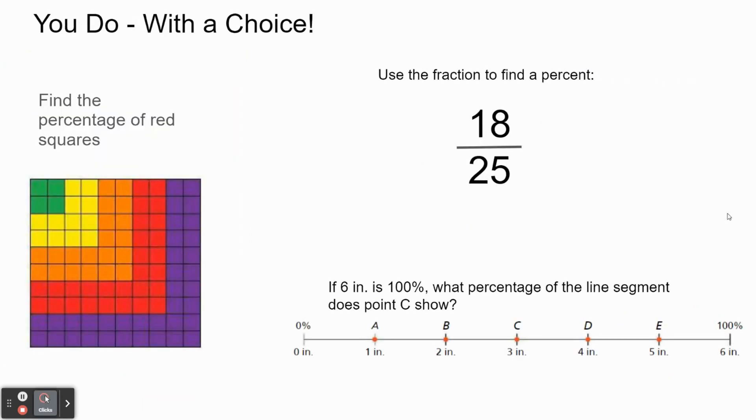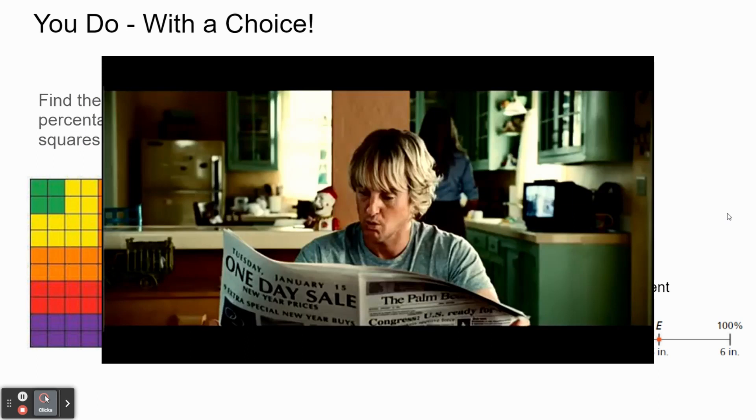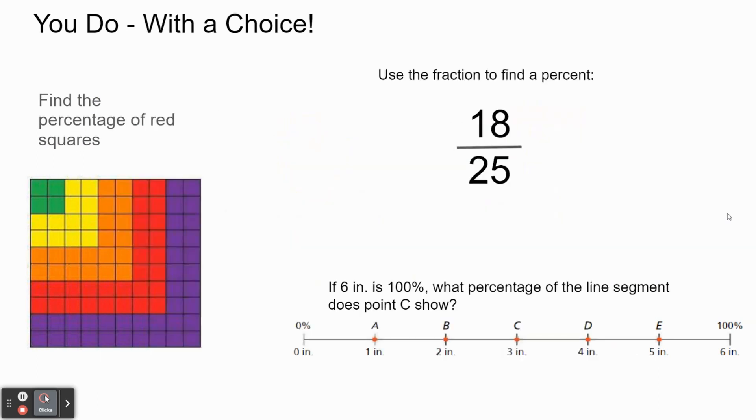Your 'you do' for today is a little bit different because you have a choice. You got three problems up here. You can choose whichever one you want to do. The first one there, find the percentage of red squares based on that grid. Second one, use the fraction to find a percent - think about what do you need to do to 25 to make it 100. And the third one uses a number line. If six inches is 100%, what percentage of the line segment does point C show? So what do you think? That was a little bit different than the number line one we did, but it's close enough.